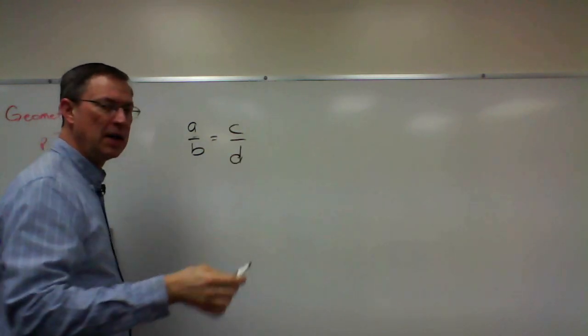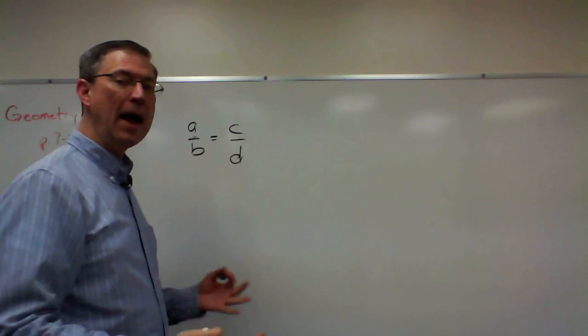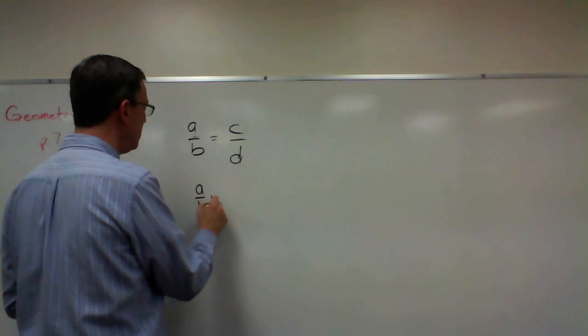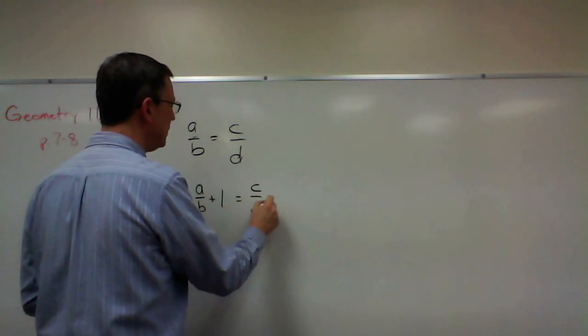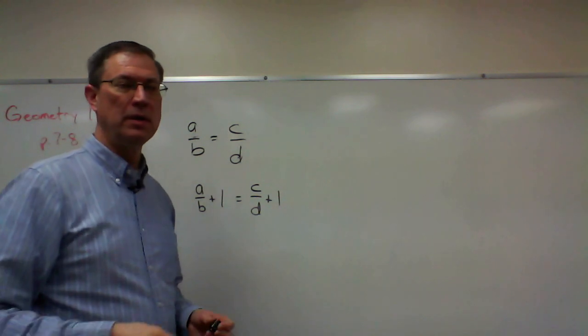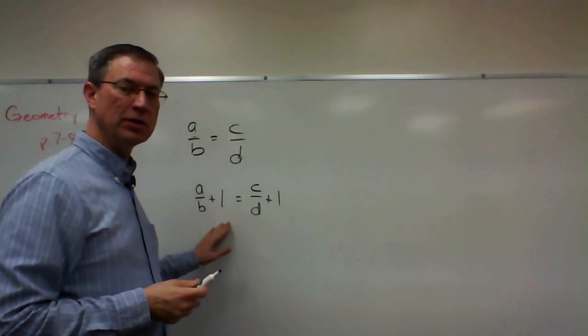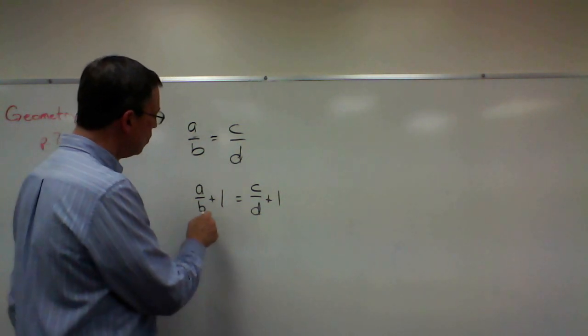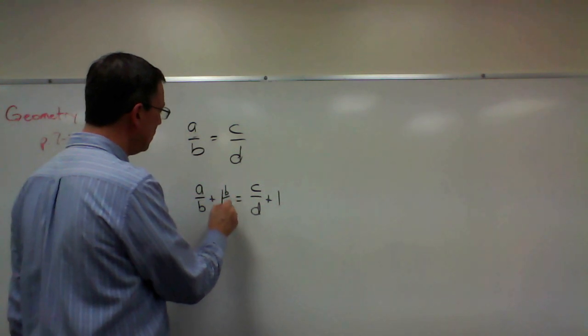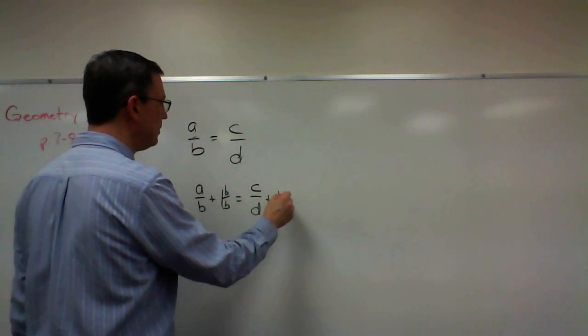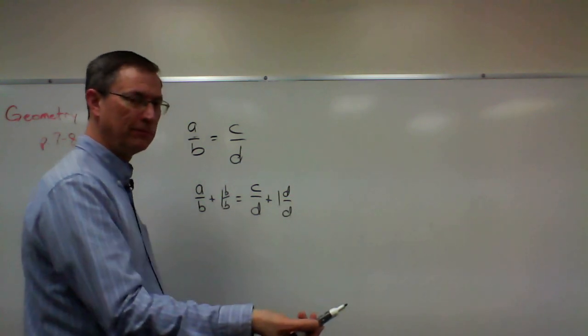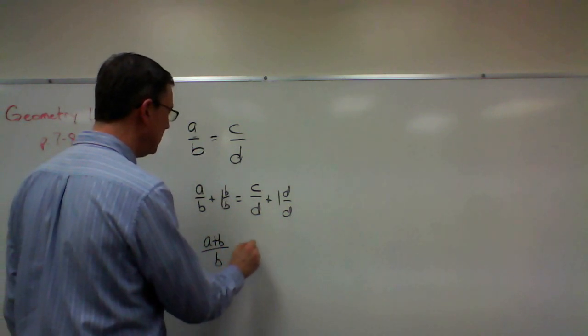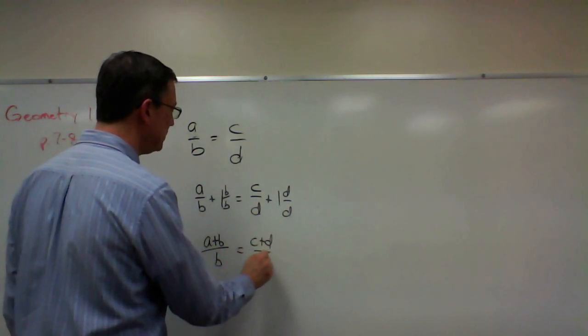And they're saying that if we add the same thing to both sides, let's add 1, so A over B plus 1 would be equal to C over D plus 1. Now, when we're adding with fractions, we have to have a common denominator. So this is going to be B over B, and this one is going to be D over D.